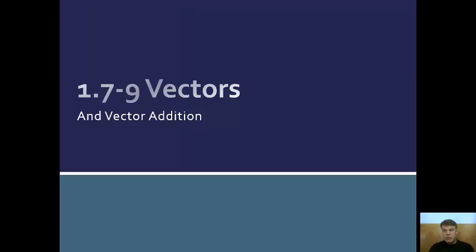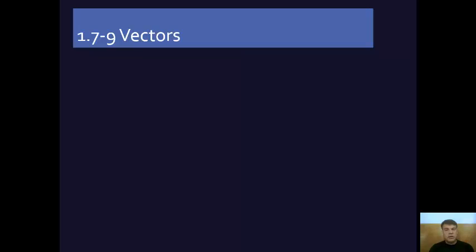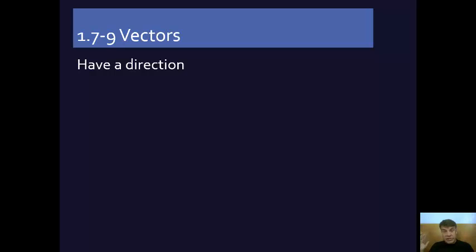Vectors strike fear into the heart of some students, but basically they are a magnitude with a direction. So let's say I were to tell you, I'll meet you 10 miles from here. Well, that's not very helpful unless you know what direction I'm going in — am I going south, north, east, or west? And so 10 miles is what's called a scalar — it's just a magnitude.